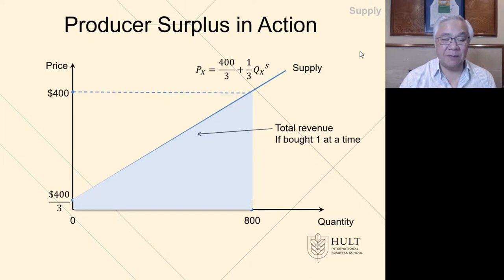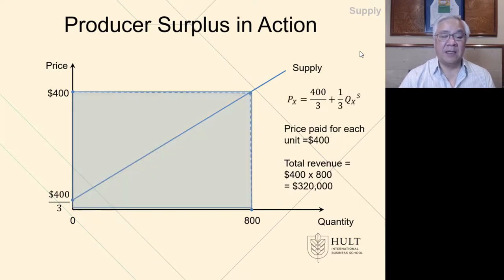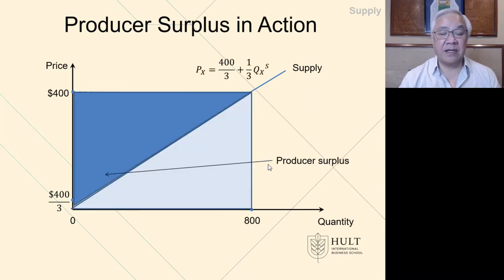More likely is the following: there is a set price—here it's $400—and everybody gets it at that price. Some people were maybe willing to pay a higher price, but that doesn't matter; they're all going to get the same price. This is the total revenue available to the producer: $400 times 800 units, which is $320,000. That's total revenue.